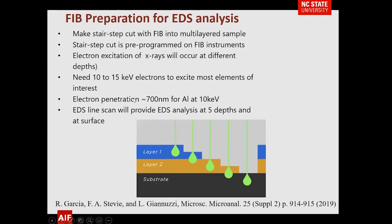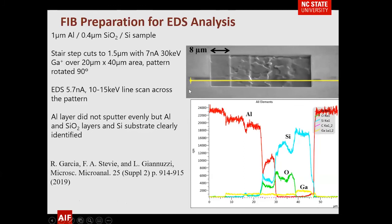One more example: preparation for energy-dispersive analysis designed for quick look. Here you can see the stair-step we used before. We do an EDS line scan at various locations going deeper into the material. We know electrons penetrate a certain distance, which prevents doing this directly with EDS because of signal coming from layers below. The FIB cut took less than five minutes. The EDS line scan shows you going through the aluminum layer, then picking up an SiO2 layer, then totally into the silicon. The gallium signal gives an idea of how much gallium resides in the material after analysis.